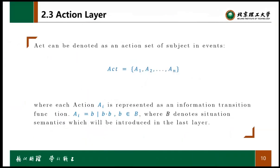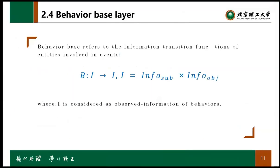As mentioned before, the action layer introduces behavior sets and behavior algebras to construct the running behavior of an event. The behavior-based layer is for representing atom event behavior with behavior bases through considering the information transition functions of entities involved in events.